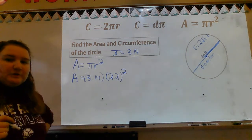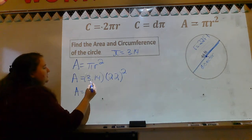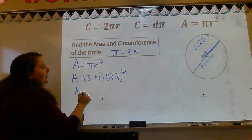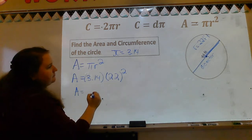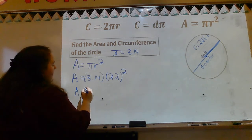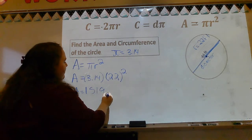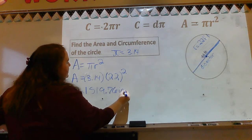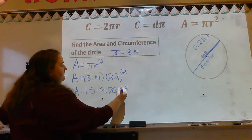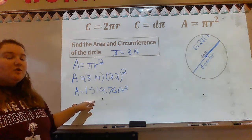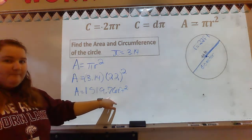I'm going to multiply 22 times 22 times 3.14, and when I multiply all of those out, I get 1,519.76 feet squared. That tells me inside of my circle is 1,519.76 feet squared.